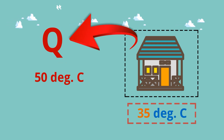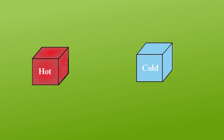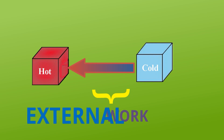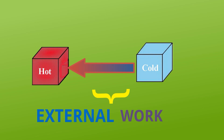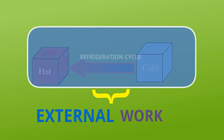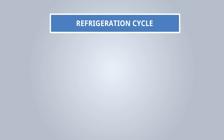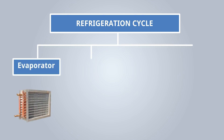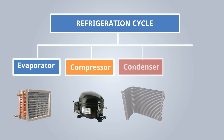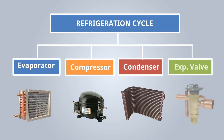So we have to remove the heat from the room. The room is the cold body and the outside is the hot body, and we have to transfer heat from the cold body to the hot body. To do that, external work must be done — and that is why the concept of the refrigeration cycle comes into picture. The refrigeration cycle has four basic parts: evaporator, compressor, condenser, and expansion valve.